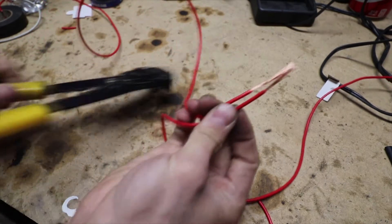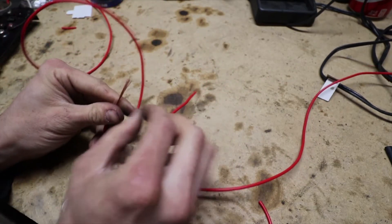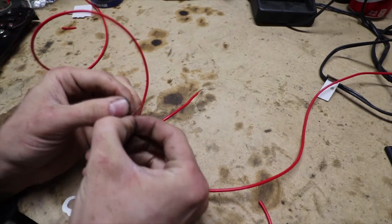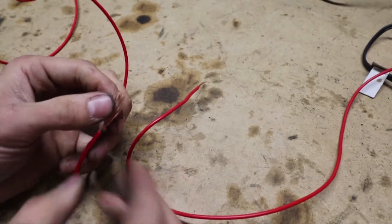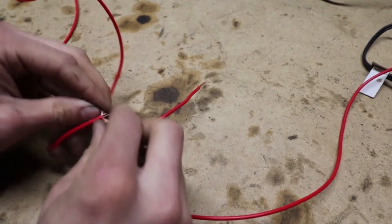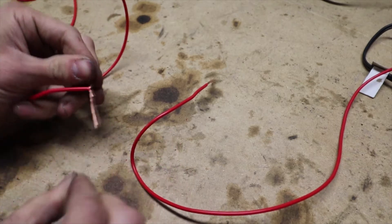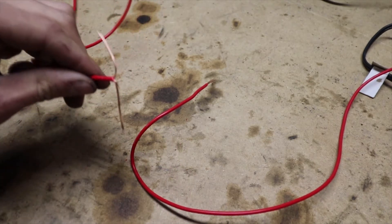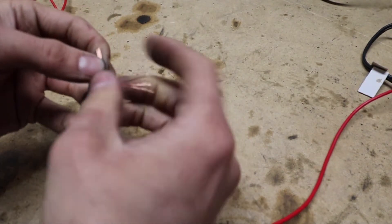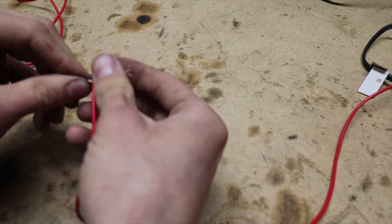Now what is cool about this method is that it adds a redundancy to your splice, so it's probably overkill for most applications. However, if you want a splice that is really strong, this is a good method. So you're going to separate both of them into T's like so. You want about equal amount of strands in each T.